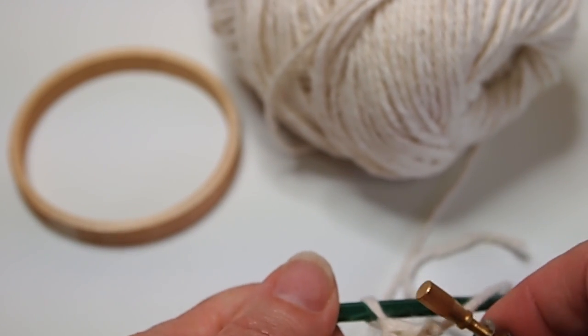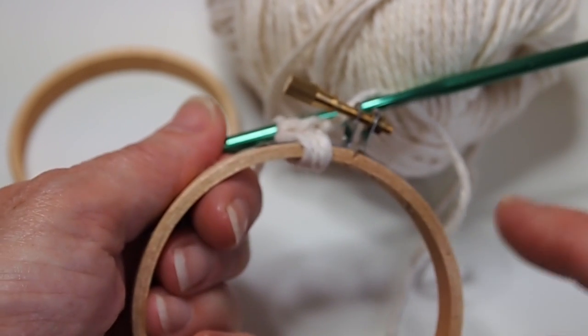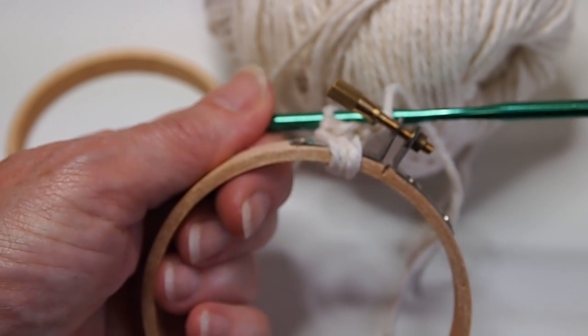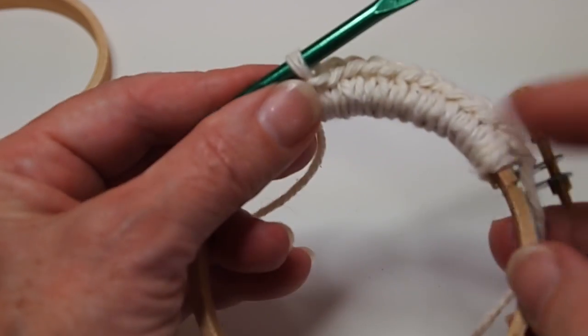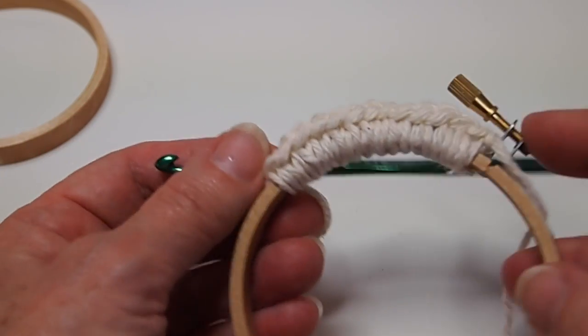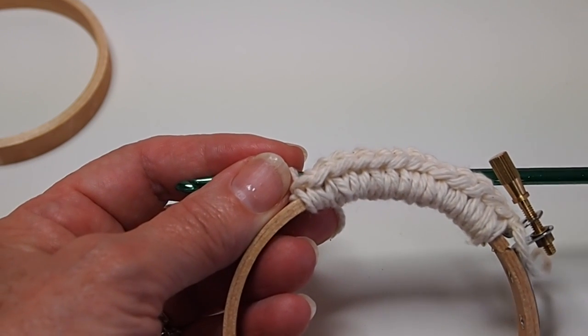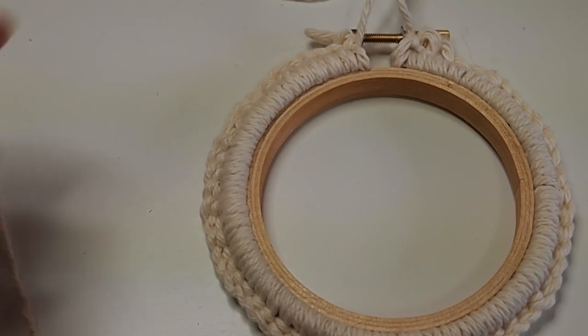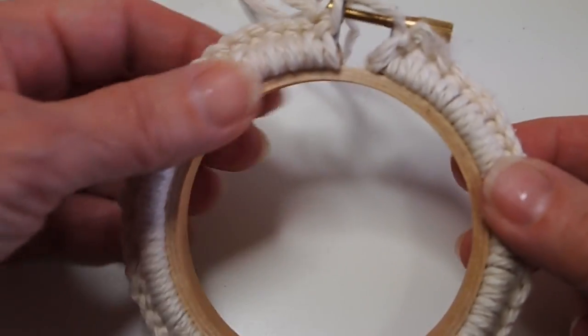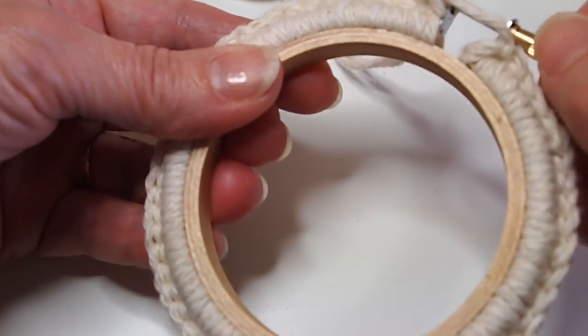You'll want to keep scooting the stitches towards the top where your embroidery hoop has the screw. You may want to remove the screw to get it out of your way. Just continue doing this all the way around, scooting the stitches closer together so they're nice and tight, firm, and even.